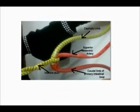The lobe has the cephalic and caudal limbs. The cephalic limb of the lobe develops into the distal part of the duodenum, the jejunum, and part of the ileum. The caudal limb becomes the lower portion of the ileum, the cecum, the appendix, the ascending colon, and the proximal two-thirds of the transverse colon.